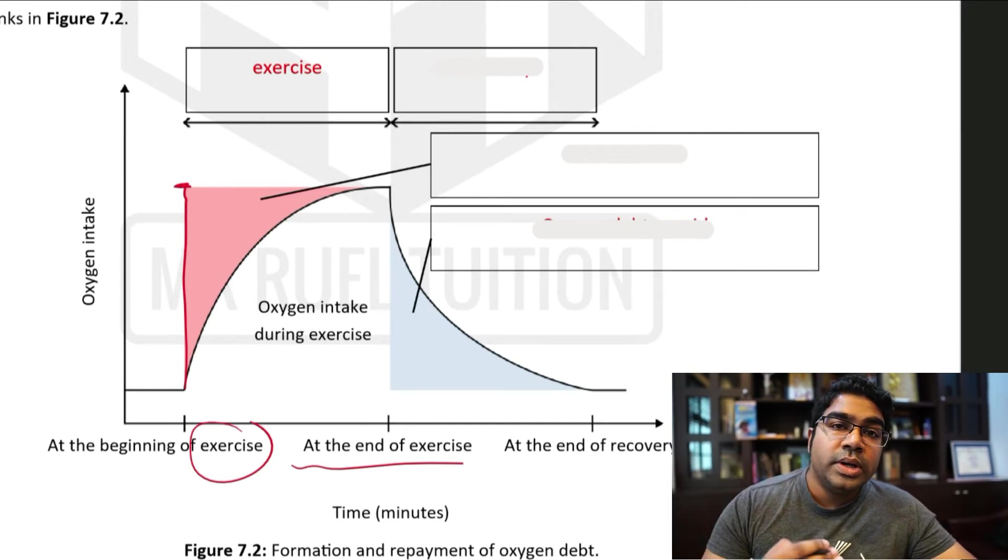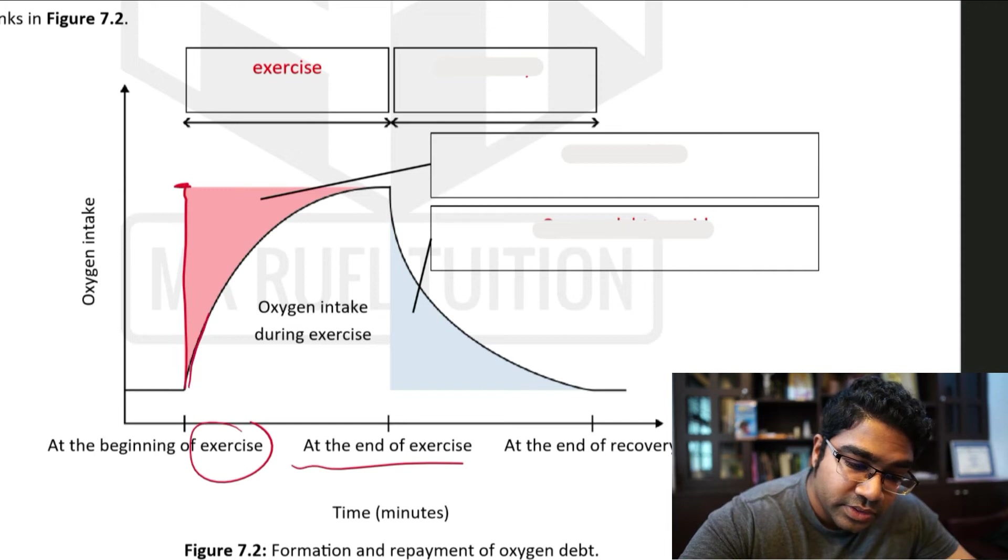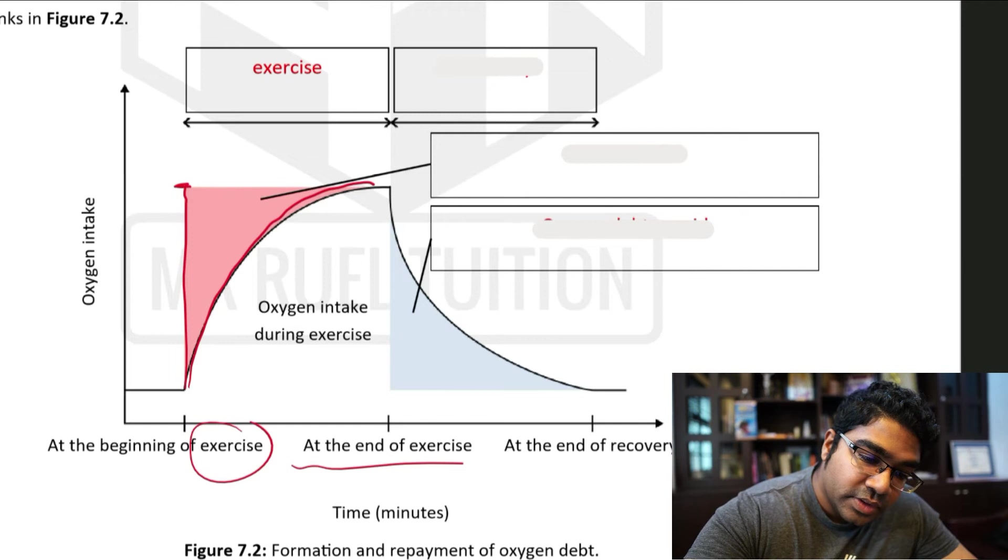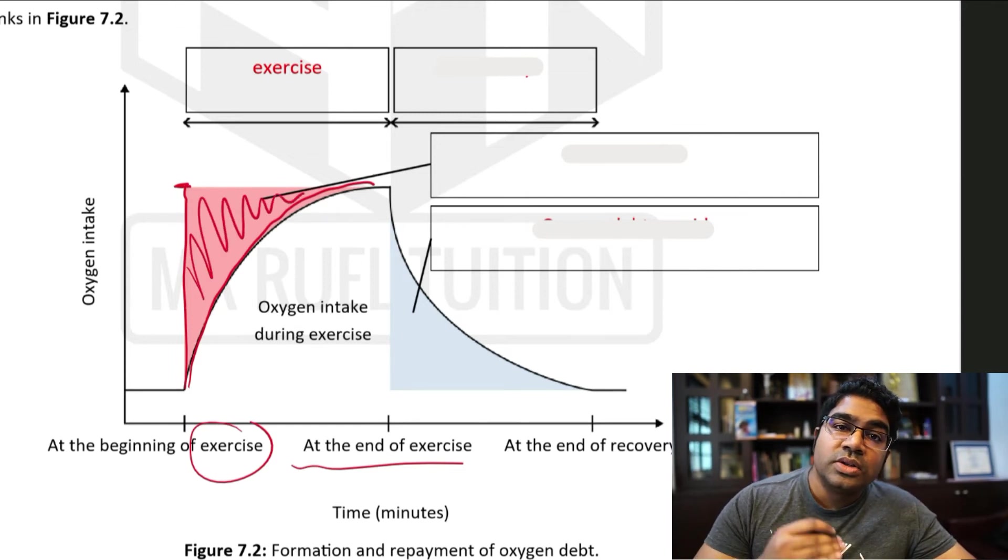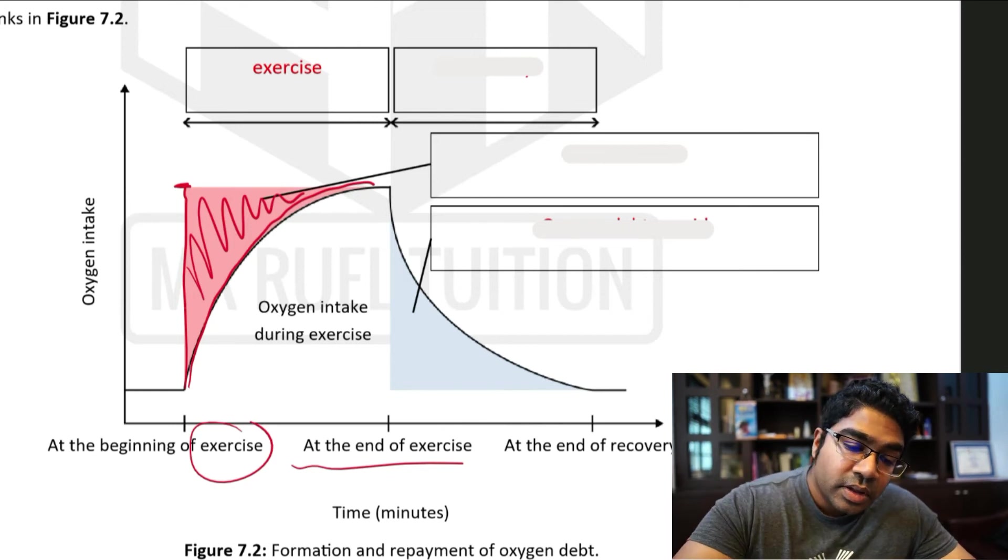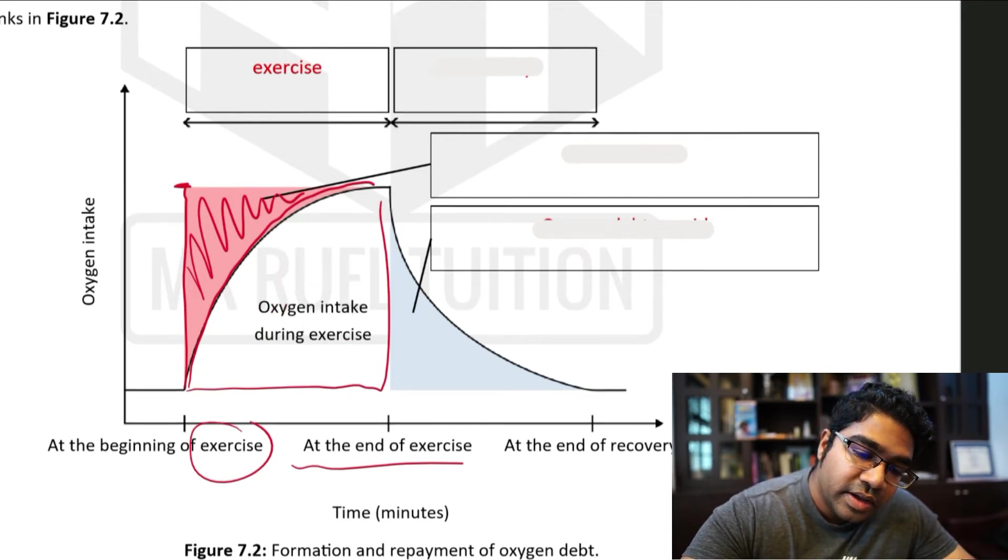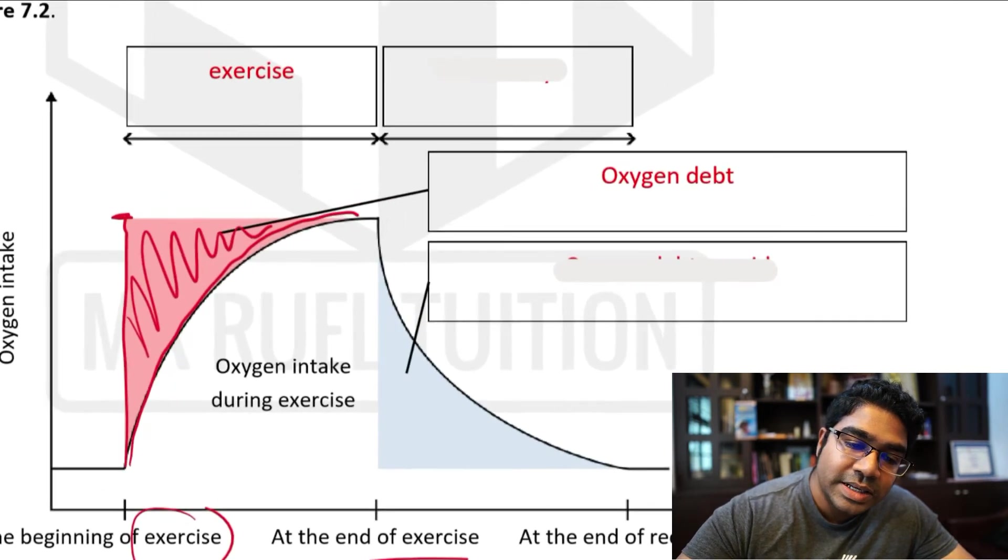However, our body cannot instantly take in that amount of oxygen. So what's going to happen is it's going to rise slowly. But this amount of oxygen is needed all the time, which is not supplied by the blood circulatory system. The oxygen intake is only this part. Only this part is supplied. So this area here is what is represented by the oxygen debt.